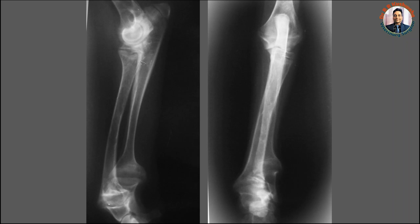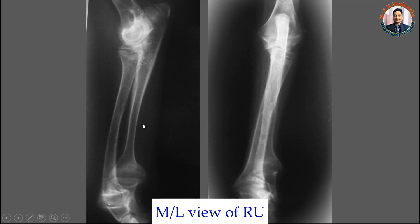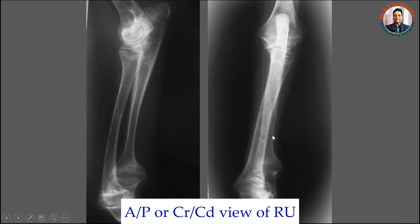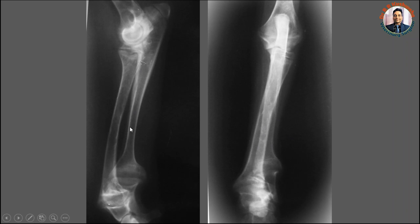Today I am going to describe the radiographic features of a dog suffering with rickets. You can see here, this is the mediolateral view of the radius and ulna, whereas this one is the anterior-posterior view, or craniocaudal view. In this particular radiograph, I am going to describe the normal radiographic anatomy and then where the abnormality is seen in case of rickets.